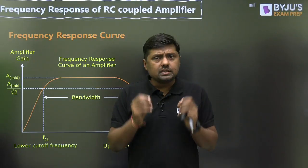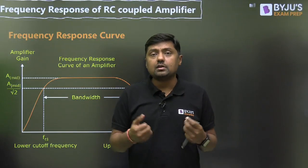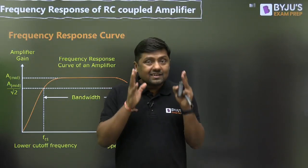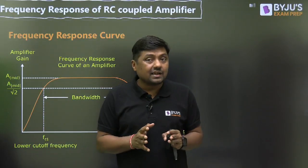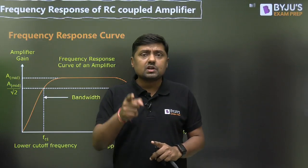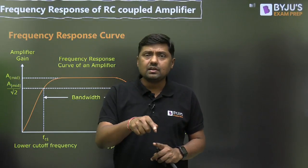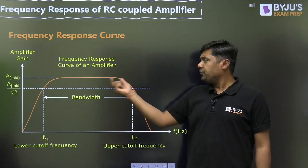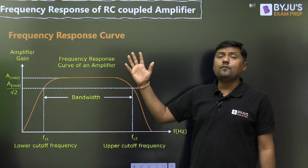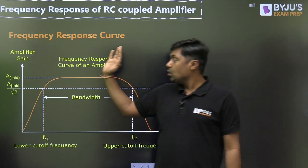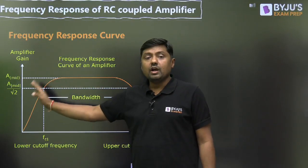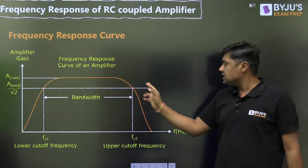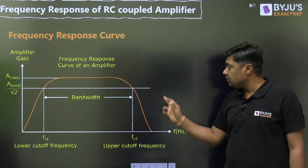And all the internal capacitances — diffusion, transition, wiring, stray — will act as open circuit. Ideally, all the coupling capacitors should act as short circuit and all the internal capacitors should act as open circuit. In mid frequency, gain is independent of frequency. But when we are decreasing the frequency, the gain will reduce. When we are increasing the frequency, the gain will also reduce.